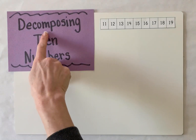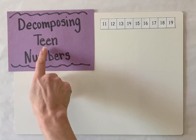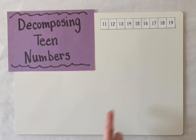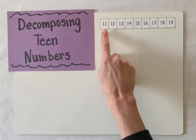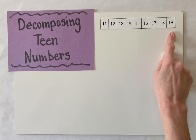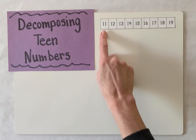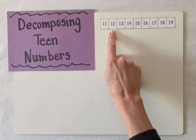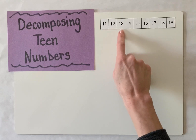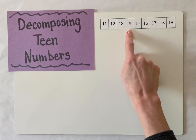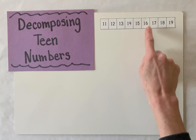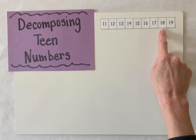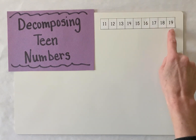Today, we're going to talk about decomposing teen numbers. Let's remember, our teen numbers are numbers 11 through 19. Say the number names as I touch them: 11, 12, 13, 14, 15, 16, 17, 18, 19.